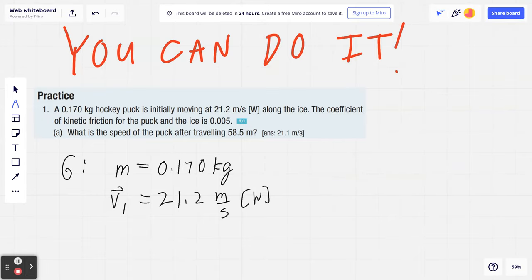The coefficient of kinetic friction, mu K, equals 0.005. It's also giving you the displacement, so delta d is 58.5 meters.